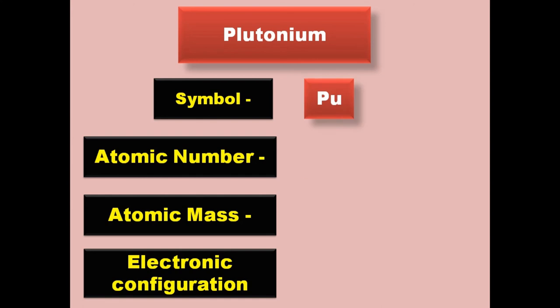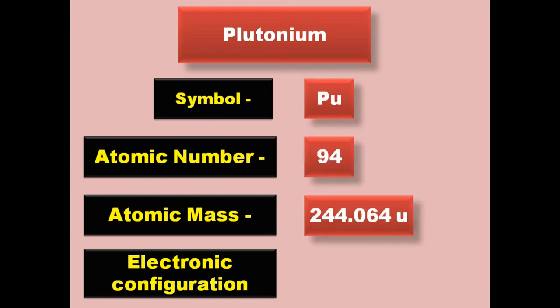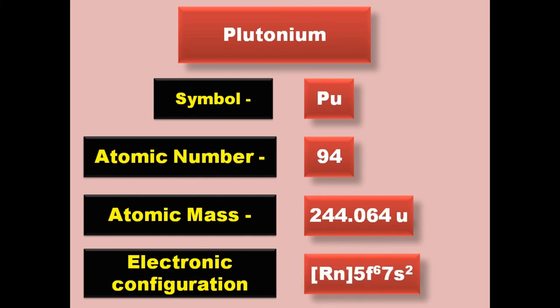Plutonium has symbol Pu, atomic number 94, atomic mass 244.064, electronic configuration [Rn] 5f6 7s2. Plutonium is an actinide and exists in solid form at room temperature.